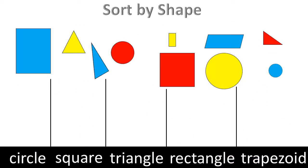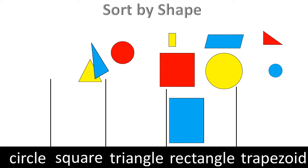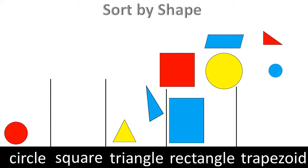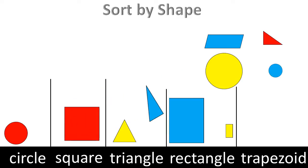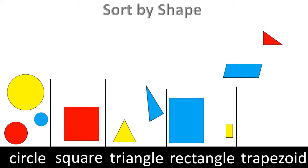Sort by shape. Rectangle. Triangle. Triangle. Circle. Rectangle. Square. Circle. Rectangle. Circle. Trapezoid. Triangle.